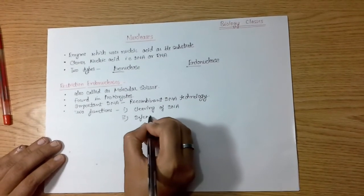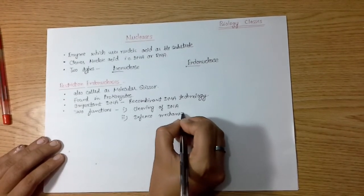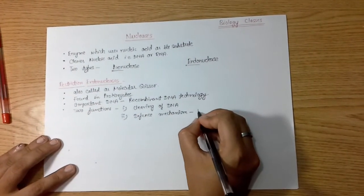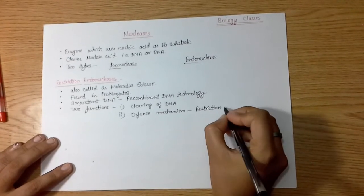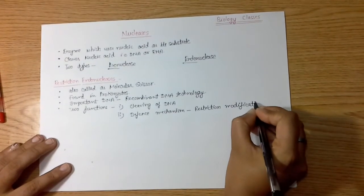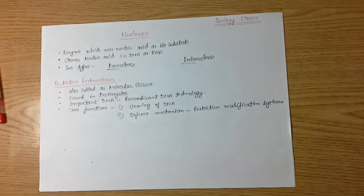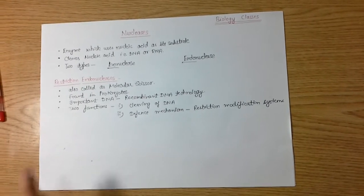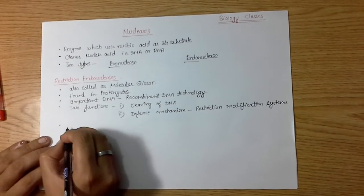Defense mechanism in prokaryotes itself. Defense mechanism by restriction endonuclease is termed as restriction modification system in bacteria, especially in E. coli. The cutting by restriction endonuclease is sequence dependent.